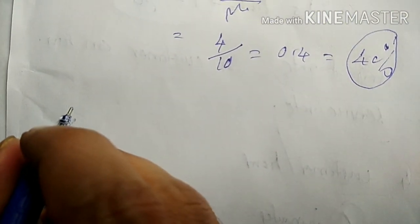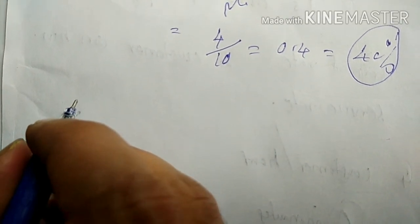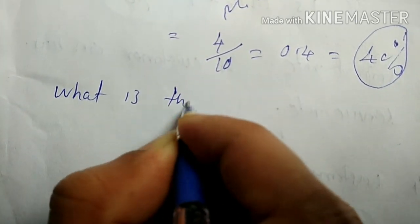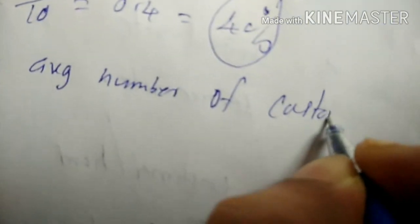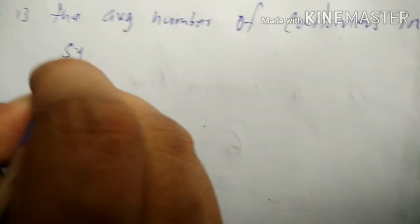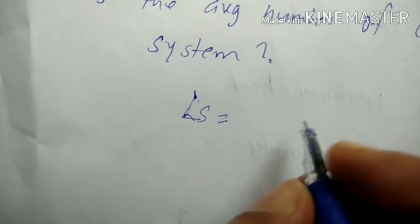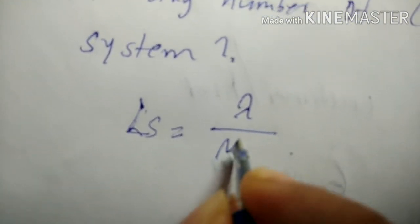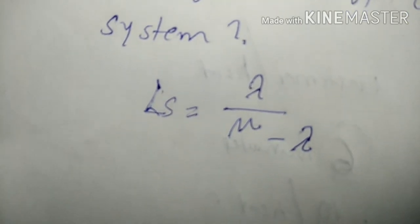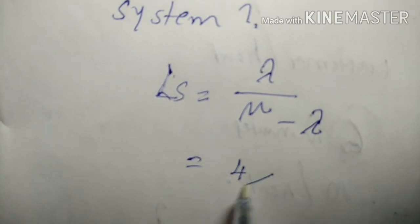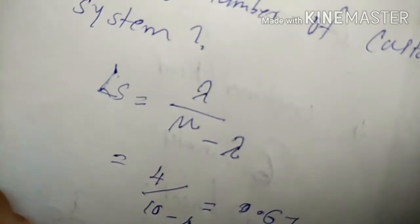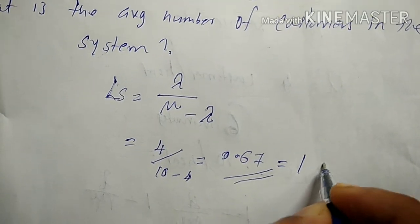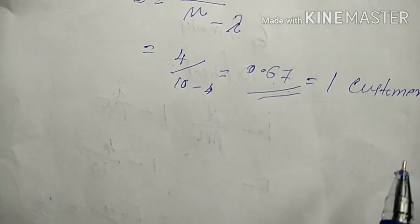For the average number of customers in the system, we use Ls equals lambda divided by (mu minus lambda). Ls equals 4 divided by (10 minus 4), which equals 4 divided by 6, approximately 0.67. Rounded, that is 1 customer in the system.